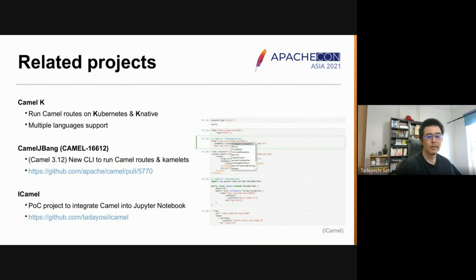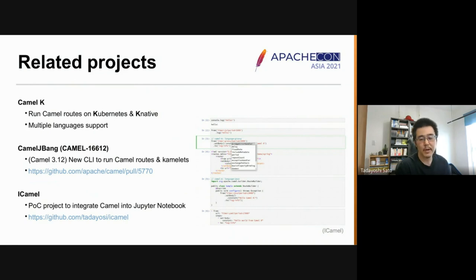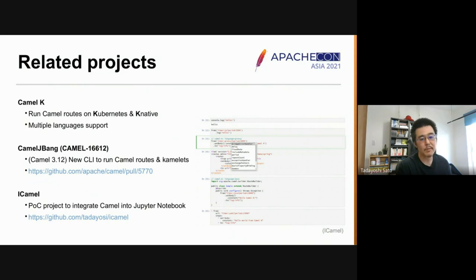Also, the Apache Camel project itself is working on creating a new command line tool called Camel JBang. It will be available in the next Camel 3.12 release. It's still under development, so let's stay tuned.